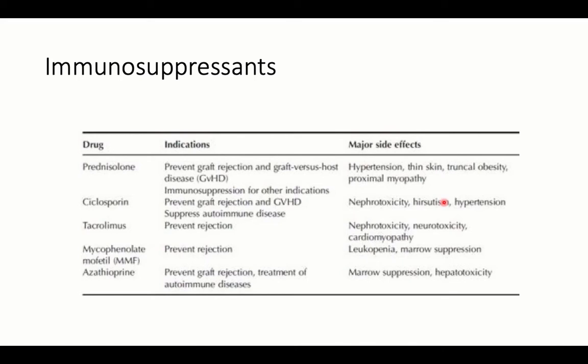Tacrolimus is used to prevent rejection and can be complicated by nephrotoxicity, neurotoxicity, and cardiomyopathy. Mycophenolate mofetil is used in nephrotic syndrome and transplantation and can cause bone marrow suppression and leukopenia. Azathioprine prevents rejection and is used in autoimmune diseases like systemic lupus and autoimmune dermatological diseases; side effects include bone marrow suppression and hepatotoxicity.